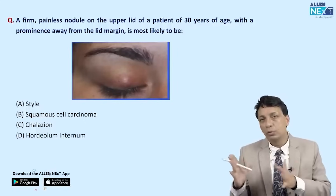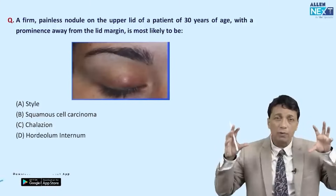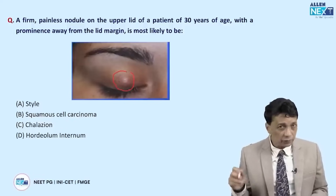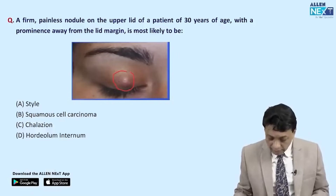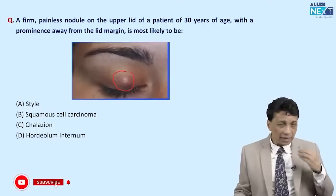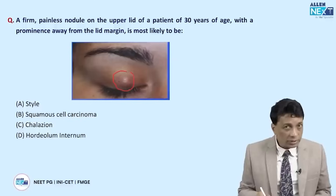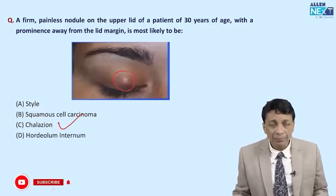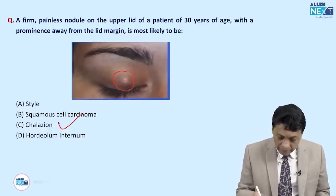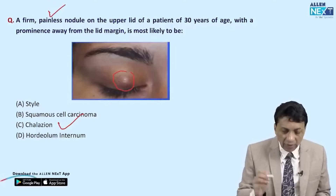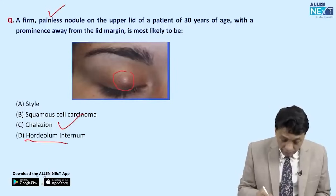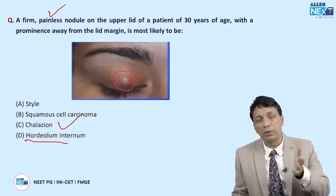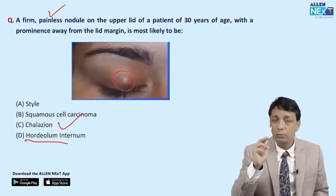A firm, painless nodule is seen on the upper lid of a 30-year-old patient, with prominence away from the lid margin. It is not a stye (which is painful), not an internal hordeolum (also very painful), and squamous cell carcinoma is unlikely in a 30-year-old. This is a chalazion — a chronic inflammatory granuloma of the Meibomian glands — presenting as a painless nodule in the typical chalazion position.